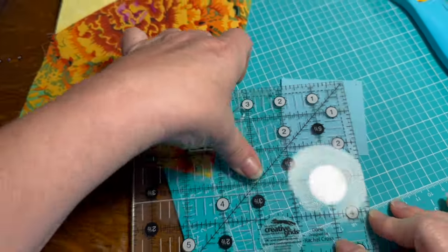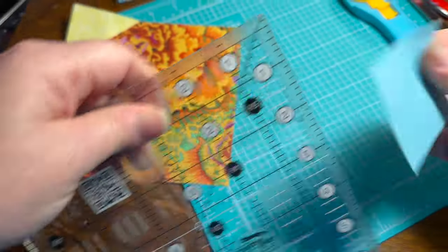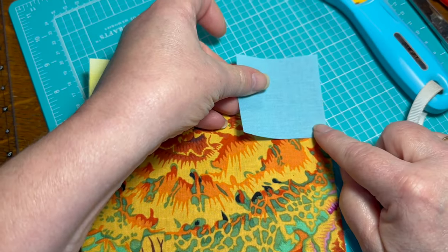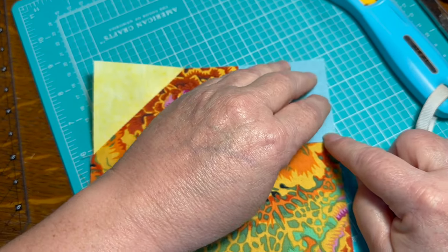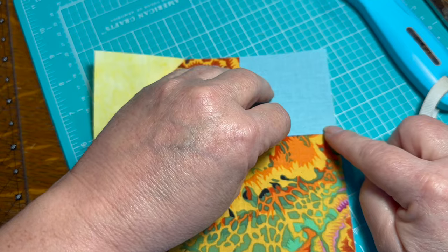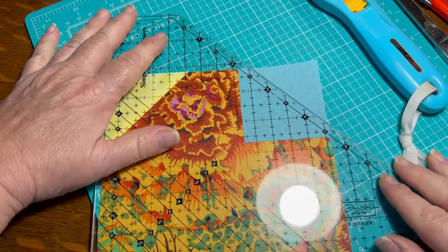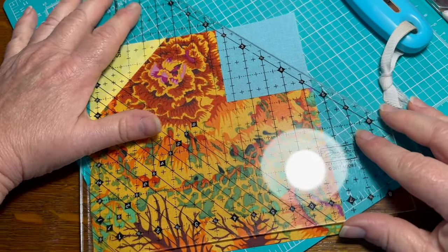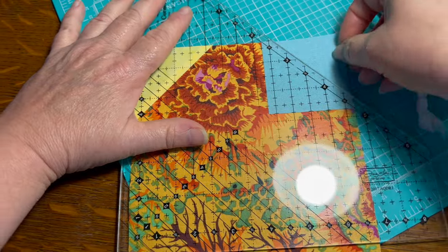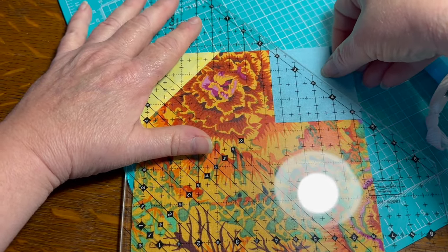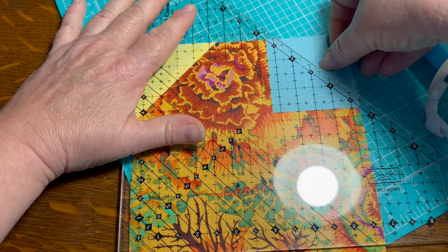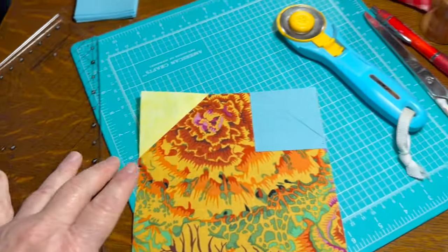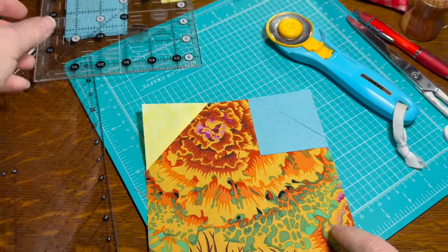I finger press this and I did pre-starch all my fabrics to make this process easier. Let me check my square, make sure it's two and a half inches because again I had a cutting error. That one looks like it's short on that side so I'll compensate when I line this up. Again I'm going to use your covered corners method whichever method you use. And I'm going to repeat that for this corner.